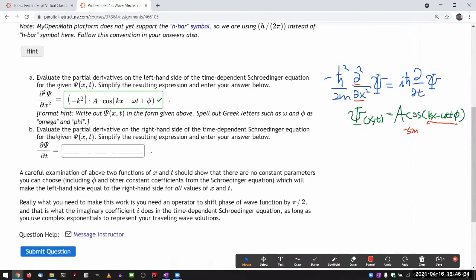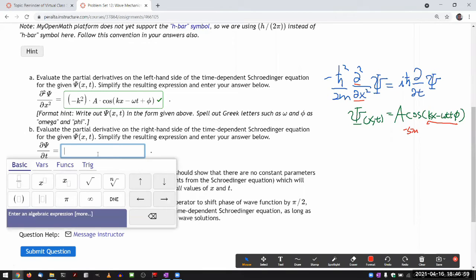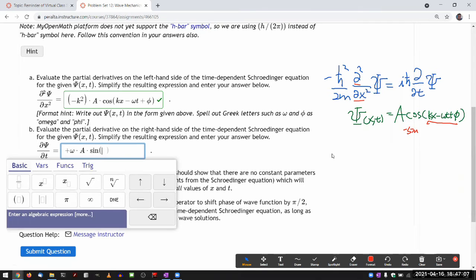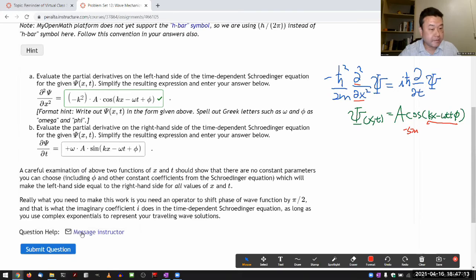It says evaluate the partial derivative on the right hand side of the time dependent Schrödinger equation for the given psi. So I'm staring at this again. And when I take the derivative with respect to t, the outside is the same, so I get minus sine. And then I take the derivative of the inside, so I get my minus omega. So the factor in front of the function is going to be plus omega times a, and then it's going to be sine of kx minus omega t plus phi. And that should be graded as correct.